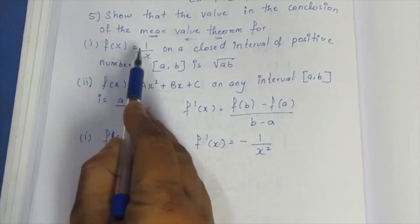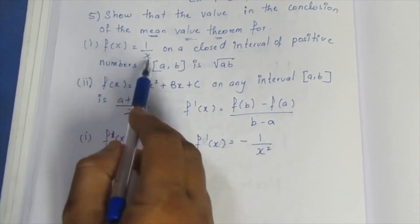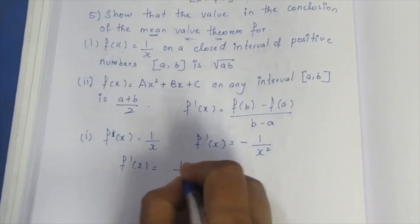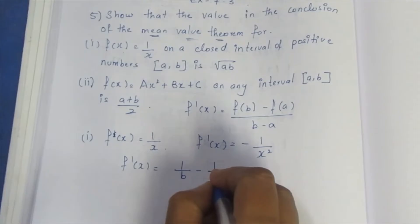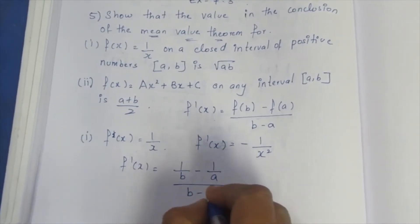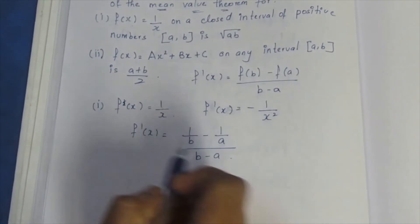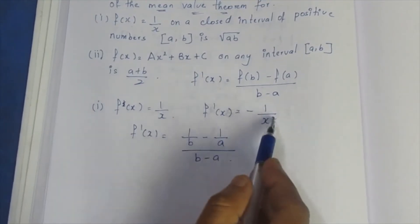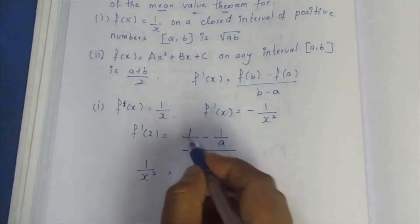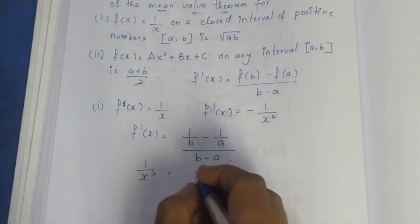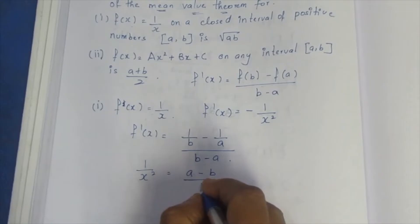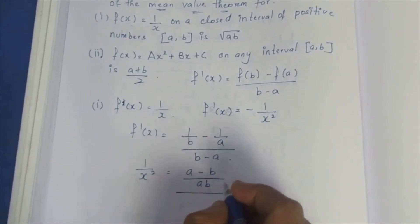Now f(b) = 1/b and f(a) = 1/a. So substituting into the MVT formula: [f(b) - f(a)] / (b - a) = [1/b - 1/a] / (b - a). This simplifies to (a - b)/(ab) divided by (b - a), which equals -1/(ab).